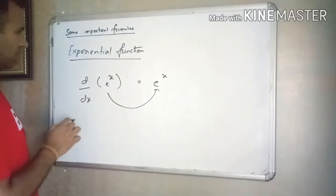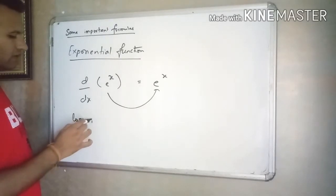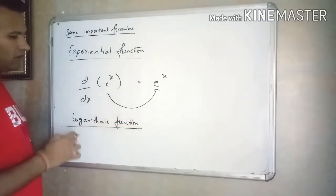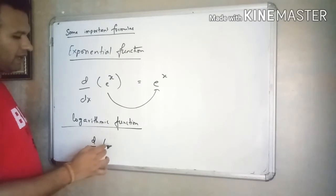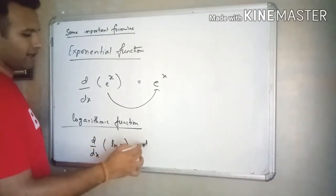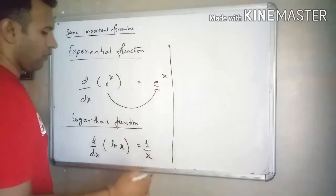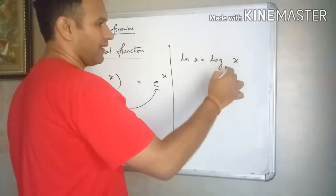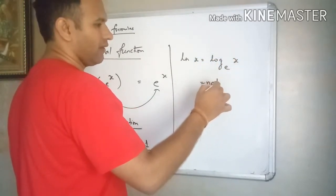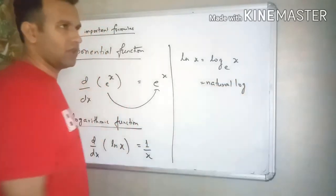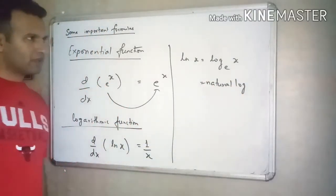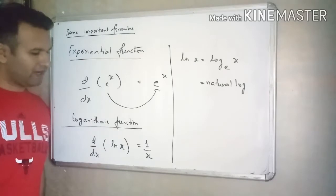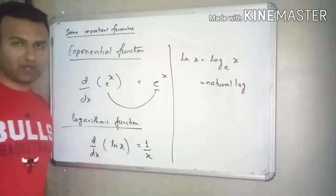And then we have the logarithmic function. If you want to find the derivative of ln x, that is 1 by x. Now, ln x is log x to the base e — this is called natural log. So whenever you have ln x, the derivative will be 1 by x.